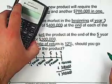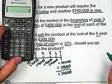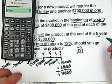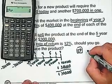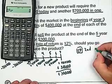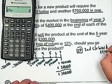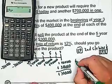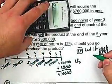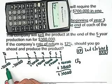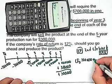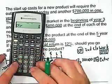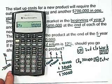To do this on the calculator, push the CF button — it's right next to the second function, you do not have to press second function. To make sure there's no old data to corrupt the new data, go second, clear work. Clear work is the CE/C button in the bottom left corner. CF zero means what did we do today? We paid out $700,000, so type that in, hit the plus/minus button to change it to a negative, then hit enter. Remember the plus/minus button because this is a negative payment.